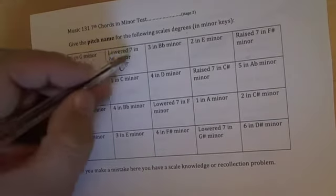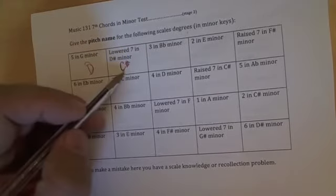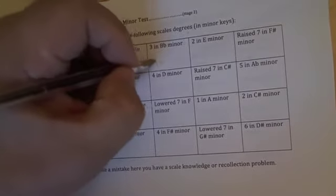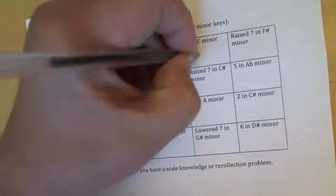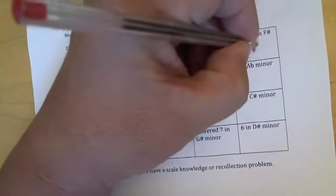So five in G minor is D. Lowered seven in D sharp minor is C sharp right there instead of C double sharp. Three is going to be D flat, two is F sharp, raised seven is going to be E sharp.